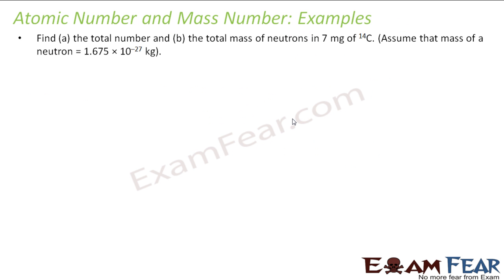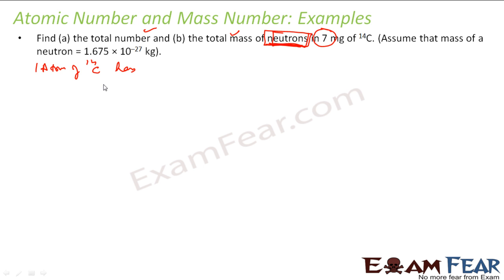Next, find the total number and total mass of neutrons in 7 milligrams of Carbon-14. Note that the hero here is the neutron. First, let's find how many neutrons one atom of Carbon-14 has. Neutrons = atomic mass − atomic number = 14 − 6 = 8 neutrons.